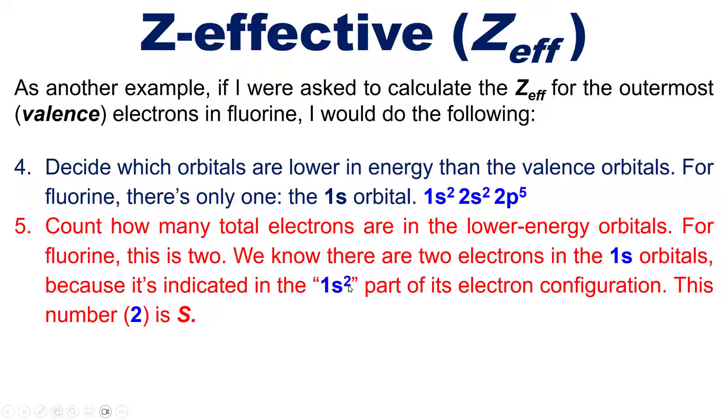That number of electrons, two, is the S value in the formula for Z-effective. Then we calculate it out. Z-effective for the valence electrons in fluorine is Z minus S, which is nine (fluorine's number of protons) minus two (the number of electrons at a lower orbital energy level). Nine minus two is plus seven, which is the Z-effective experienced by the outermost electrons in fluorine.